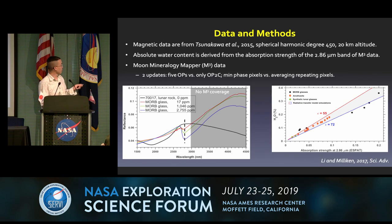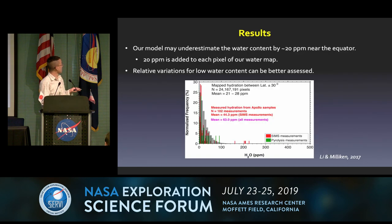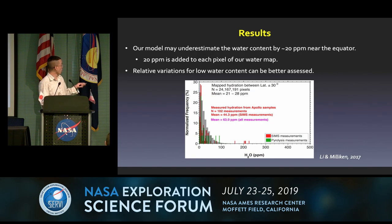There are two updates in this study. Previous studies only used OP2C data, and now we are able to incorporate all five optic period data. We also use minimum phase pixels, versus before when we just averaged the repeating pixels. The changes are subtle. We compared our orbital data with lab measurements from the past 50 years and found a slight underestimation of water content — around 20 ppm. Orbital data gives values around 20-something, but lab measurements give 40 to 60, so we add 20 ppm to each pixel.